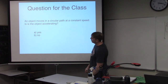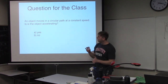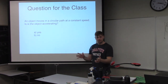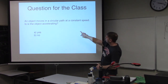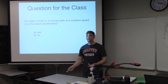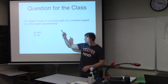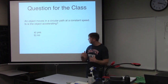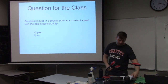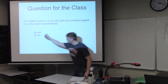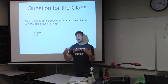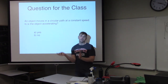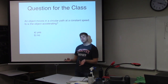Here's a question for the class: an object is moving in a circular path at a constant speed. Is the object accelerating — yes or no? Pause the video and think about it. The correct answer is yes — the object is accelerating even though its speed is constant, because its velocity is changing. Whenever velocity is changing, we have acceleration.